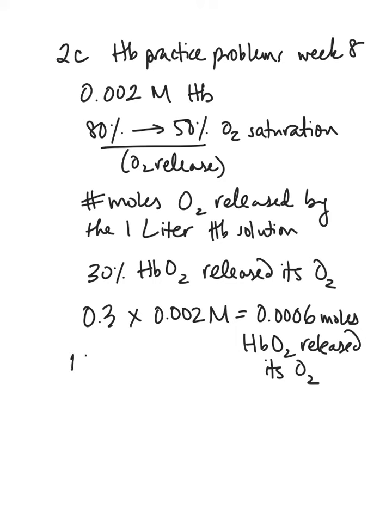At this point you have to remember that every single hemoglobin can bind to four oxygen molecules. So if one hemoglobin converts from oxyhemoglobin to deoxyhemoglobin, for every mole of hemoglobin that completely releases all its oxygen, four moles of oxygen will get released. So it's a one to four ratio. If 0.0006 moles of oxyhemoglobin released their oxygens, then you have to multiply this number by four.